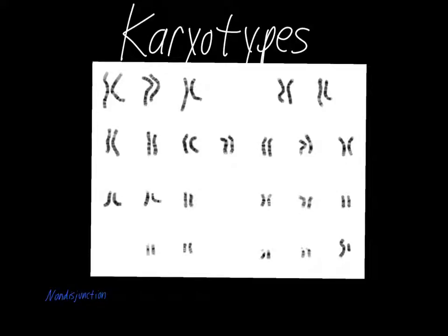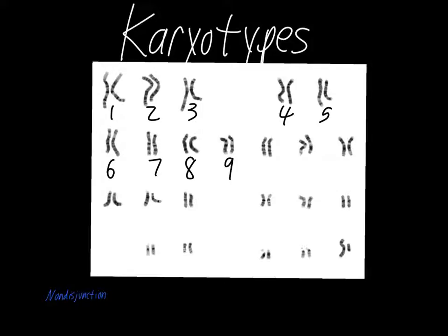Since it's a human karyotype, humans have 46 chromosomes, so you actually end up with 23 pairs of chromosomes. As we go through and number these, going up in number, the size of each chromosome is going to decrease. So we number them in order from largest to smallest.